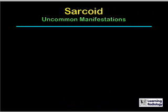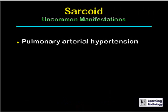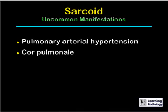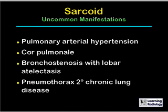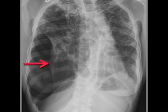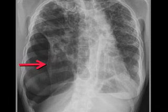Other uncommon manifestations include pulmonary arterial hypertension and cor pulmonale, and bronchostenosis with lobar atelectasis. Pneumothorax can occur with any chronic interstitial fibrosing lung disease, including sarcoid. This frontal radiograph of a patient with stage 4 sarcoid shows the red arrow pointing to a large tension pneumothorax.